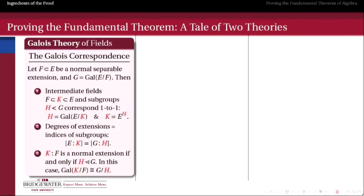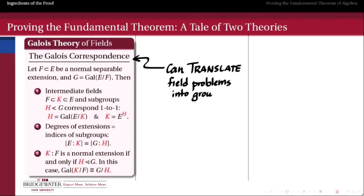So here are the ingredients. First we have the Galois correspondence from the Galois theory of fields. The Galois correspondence tells us that there is a one-to-one order-reversing correspondence between intermediate field extensions and subgroups of the Galois group of that total extension. Degrees of those extensions agree with the indices of those corresponding subgroups, and normal extensions correspond to normal subgroups. We're going to use it to translate back and forth between intermediate fields and subgroups, as long as E over F is a normal and separable extension.